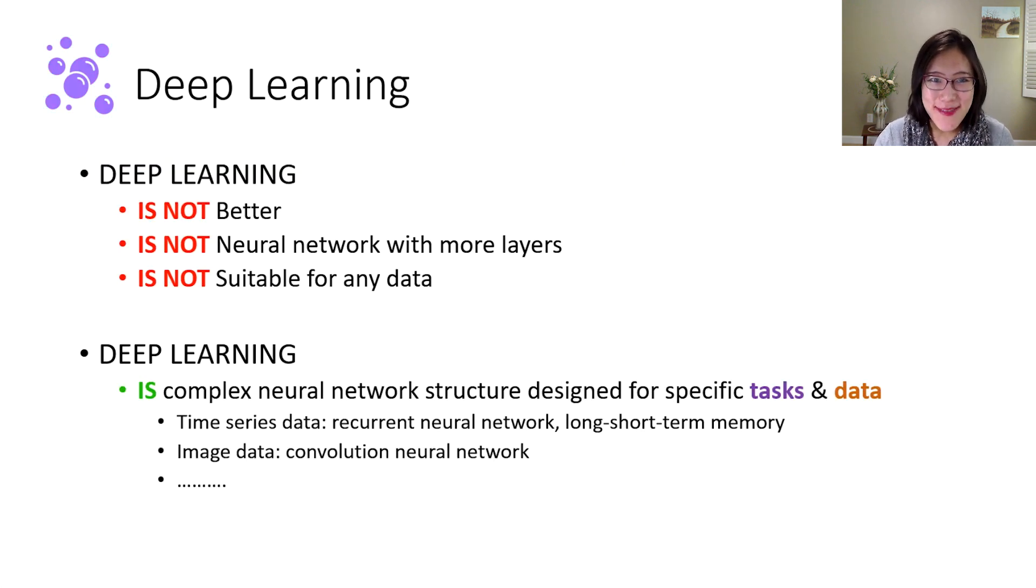And every time we talk about neural network, people ask about deep learning. Deep learning is also a very popular set of machine learning algorithms, but it's not just neural network. It is not better, it is not this more layers neural network, and it's not suitable for any data. It's more complex network structures designed for specific tasks and data, for example, time series data or image data.